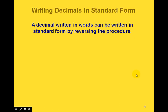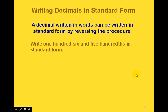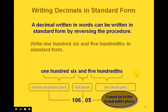To write decimals in standard form, we can take a decimal written in words and reverse the procedure. For example, if we have 'one hundred six and five hundredths' and want to write it in standard form, the whole number part is 106. The word 'and' stands for the decimal point, and then we have five hundredths. That means the 5 has to be in the hundredths place, so we put a zero in front of it as a placeholder: 106.05.